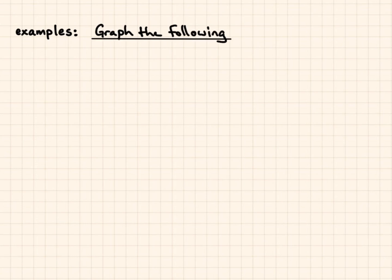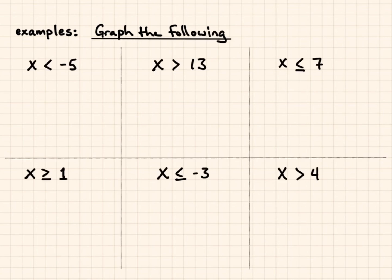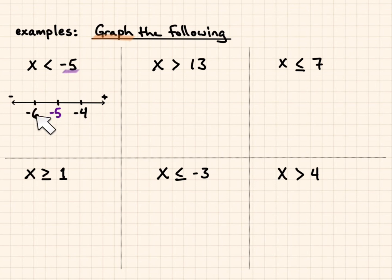Let's try some examples of graphing the following inequalities — please feel free to try these out on your own. To graph, we're going to create a number line. The value of interest is negative 5, so it goes in the center. Going towards the positive would be negative 4, and towards the negative would be negative 6. Because it cannot be equal to — it's just less than — I put an open circle and graph in the direction of the true values. Next: x is greater than 13. I'll write out a number line with 13 in the center, 14 to the right, 12 to the left. Because it cannot be equal to, I leave it as a circle, and draw the arrow going greater than 13.